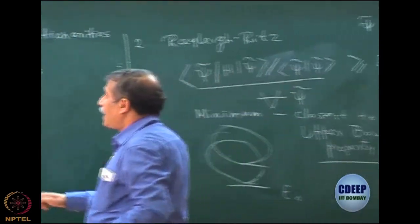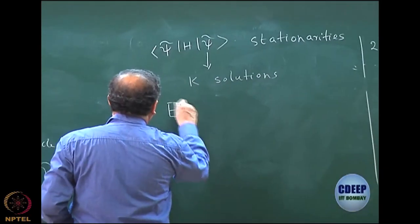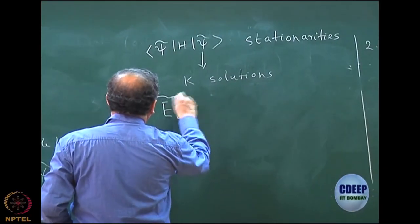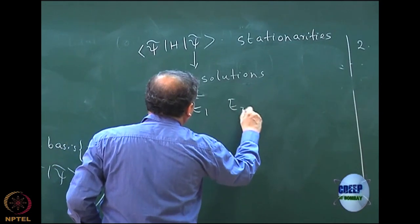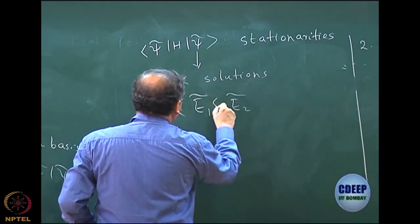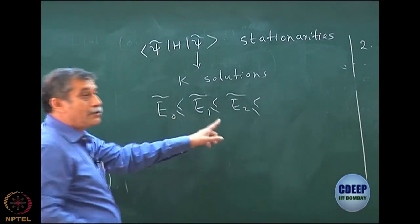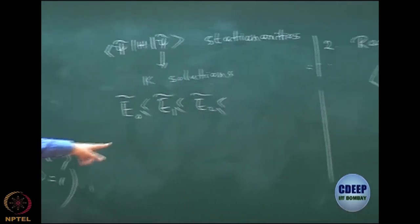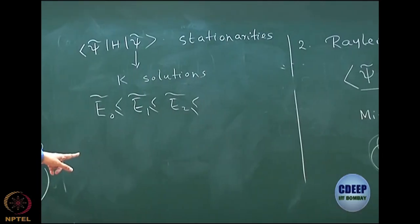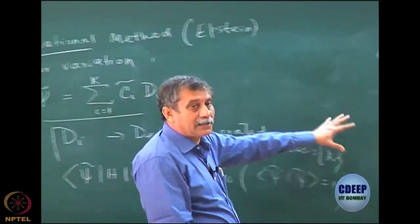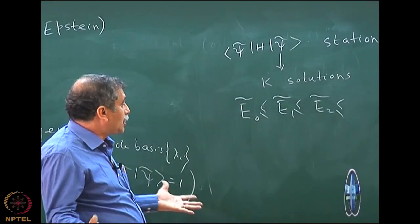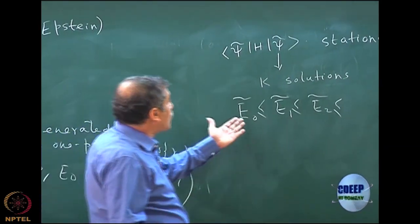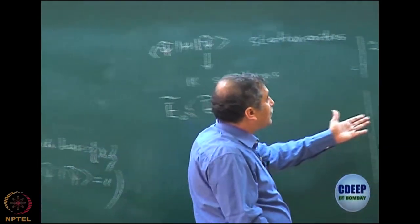That is very important. Let me order those k solutions as E_0 tilde, E_1 tilde, E_2 tilde, etc., where E_0 tilde is less than or equal to E_1 tilde, and so on. Remember, they are not exact solutions — because I have a k-dimensional subspace, they cannot be exact solutions. Yet each of them must be greater than or equal to E_0; that is clear from the Rayleigh-Ritz principle.